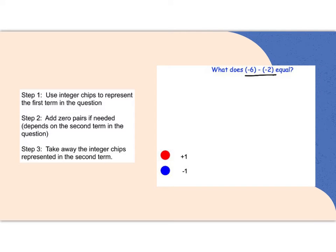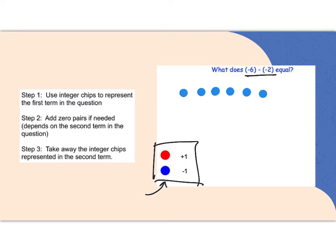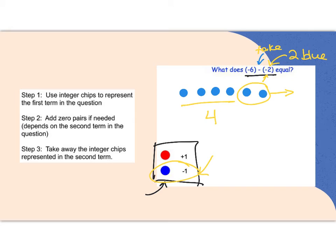Looking at the next one: negative 6 take away negative 2. Similar idea — I'm going to start with 6 negative chips. From my legend, negative is blue. So I go 1, 2, 3, 4, 5, 6. Subtract means take away, and I need to take away negative 2 — that's 2 blue chips. I'm going to circle these and remove them. This leaves me with a final answer of 4 blue chips, and blue is negative, so this is negative 4. Negative 6 take away negative 2 equals negative 4.